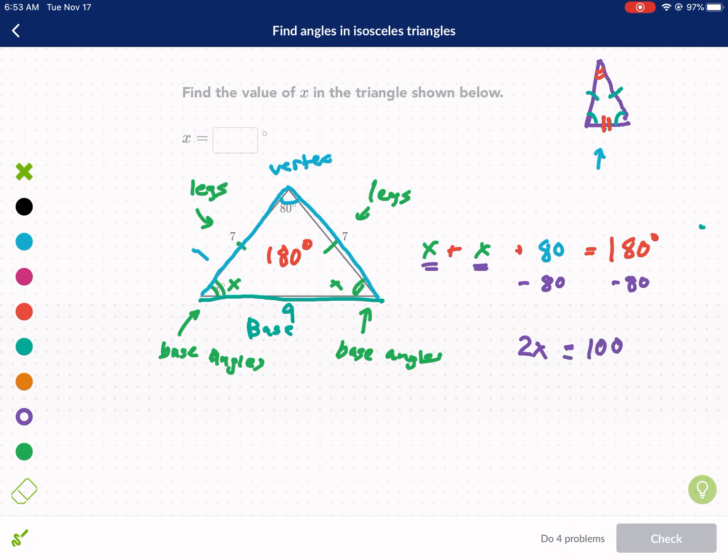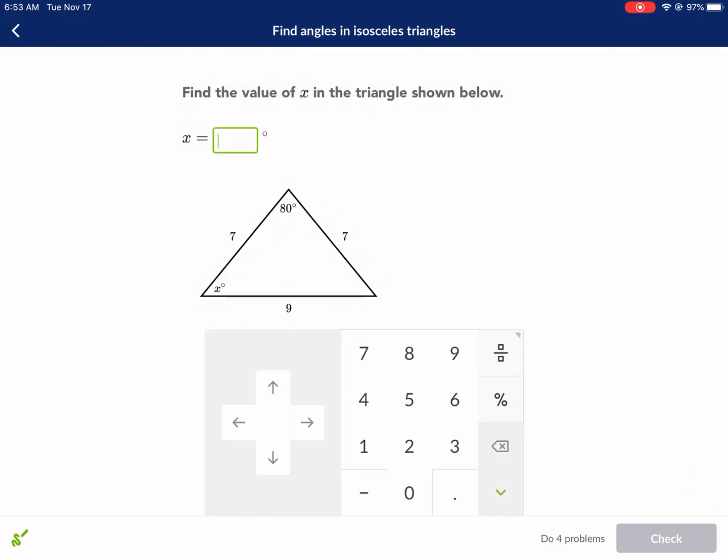So we're going to get 2x equals 180 minus 80, and we get 100. I did two steps kind of at once there, combined like terms, subtract 80 from both sides. Hope you guys were able to follow along. Now I divide by two, and I get x equals 50 degrees. Let's double check that. If this was 50, and that is 50, that's 100 plus 80, 180. That checks out. So x equals 50 degrees.